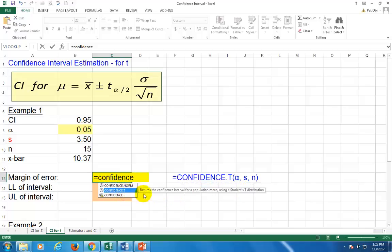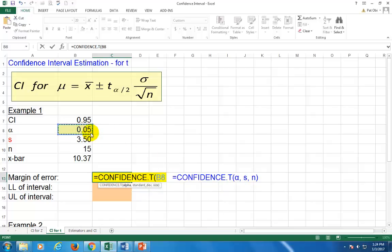If you're using older version of Excel, you'll just have to use confidence, but that calculates confidence levels for the normal distribution Z. You can either type it out or double-click. Alpha is you click on this, comma. Standard deviation, you click on this, which is the only difference between this calculation and that for the normal distribution. Normal distribution would have had sigma right here.